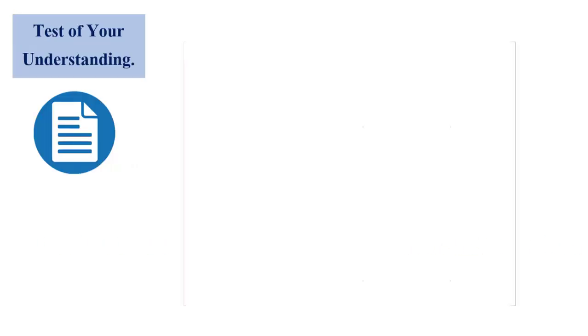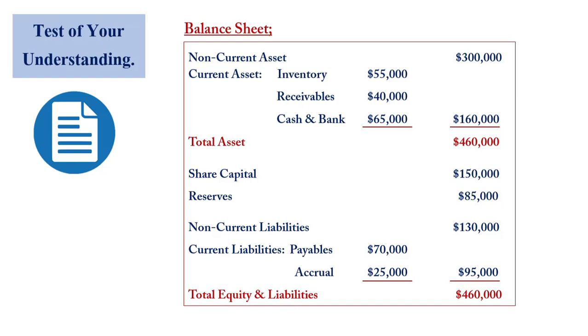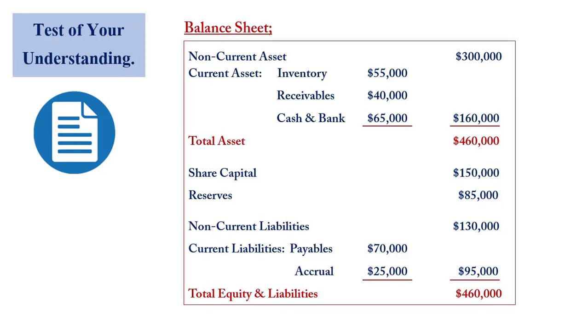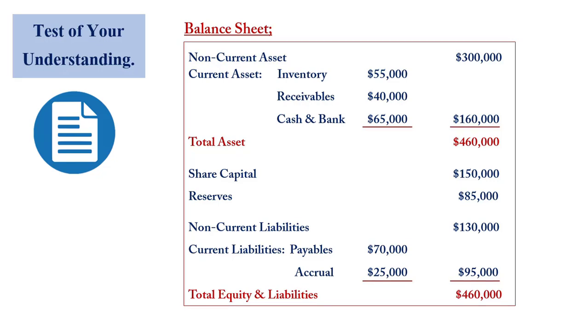Let's test our understanding. Because current assets and quick ratios are sourced from the balance sheet, we look at the balance sheet. So we have non-current assets of $300,000, we have current assets totaling $160,000 with inventory, receivables, and cash balance. We have the share capital $150,000, reserves of $85,000, non-current liabilities of $130,000, current liabilities totaling $95,000.